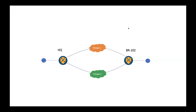First, we're going to talk about the diagram here. We have the hub router on the left side and the branch router on the right side. Those two sides are connected via the private one and private two colors. And I have a PC over here, and the PC is trying to reach the hub router to access it via the SSH protocol.